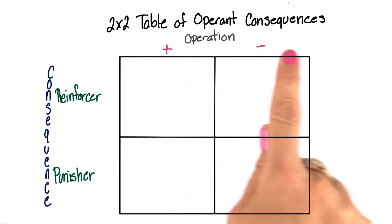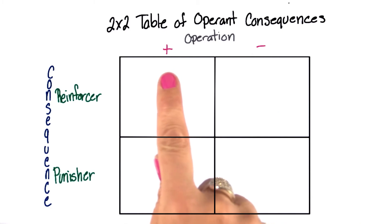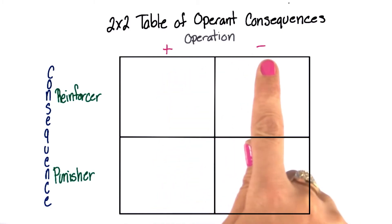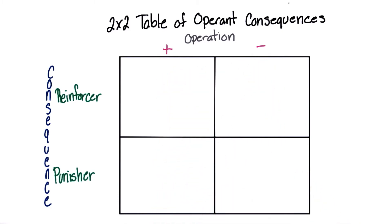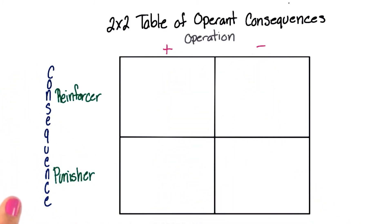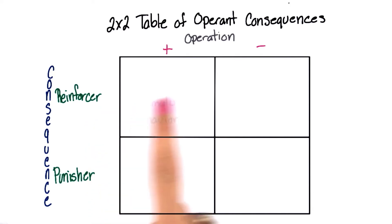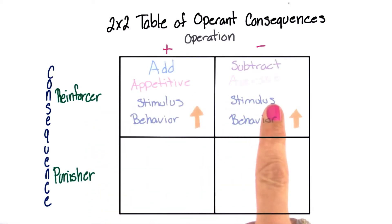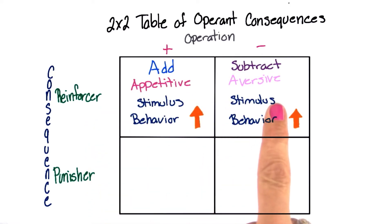So we have our operation: are we adding something or subtracting something? On the consequence side, we're going to either add a reinforcer or remove a reinforcer.